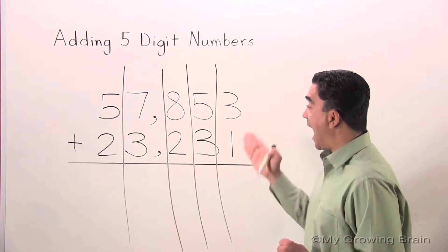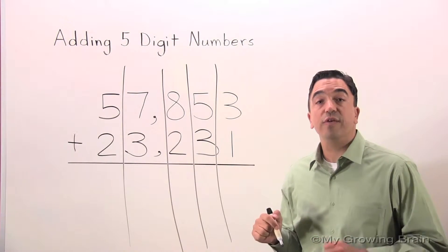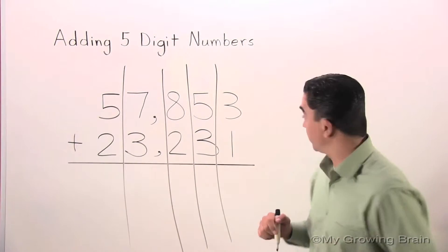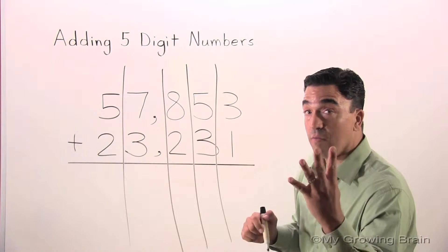I will start by adding the two digits in the ones place. Three plus one is four.